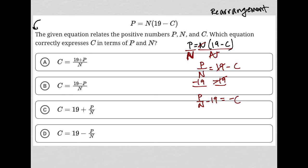I'm very close to my answer. I just have a negative C instead of a positive C. So I then multiply everything by negative 1. In doing that, I'd actually switch the order of these terms around. So instead of saying I have negative P over N plus 19, I would just put 19 minus P over N.